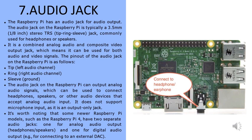The audio jack on the Raspberry Pi is typically a 3.5mm stereo TRS jack, commonly used for headphones or speakers. It is a combined analog audio and composite video output jack, which means it can be used for both audio and video signals. The pinout is: tip for left audio channel, ring for right audio channel, and sleeve for ground. The audio jack can output analog audio signals but does not support microphone input, as it is an output-only jack. Some newer models such as the Raspberry Pi 4 have two separate audio jacks — one for analog audio and one for digital audio output for connecting to an external DAC.